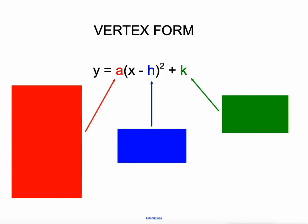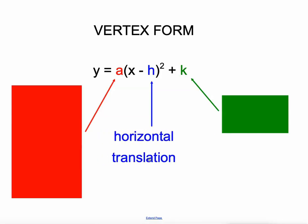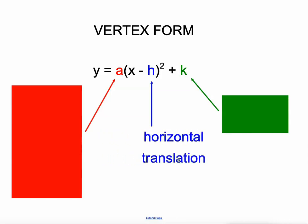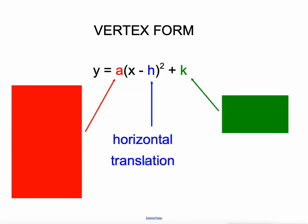So let's talk about what all these values mean. First of all, that H value right there is the horizontal translation — it's basically how far the parabola has been slid left and right. That's a horizontal translation.